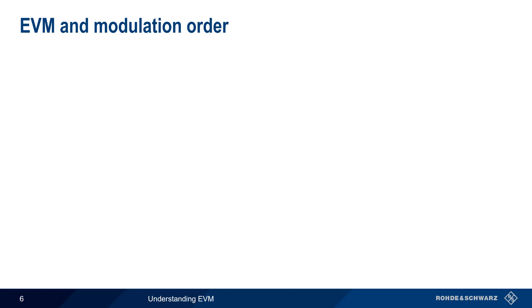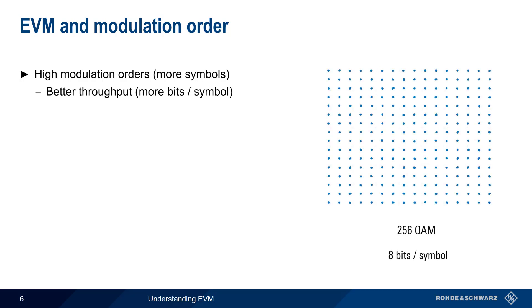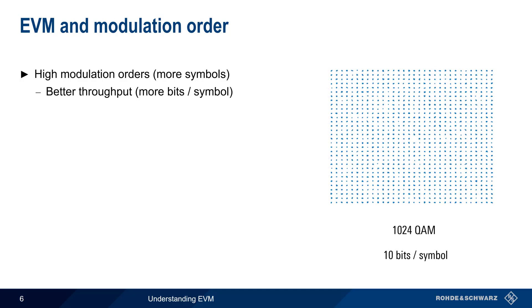Even relatively minor contributors to overall EVM become important as the modulation order increases. Higher-order modulation, that is, a greater number of symbols, means better throughput, since there are more bits per symbol. For example, 16 QAM is only 4 bits per symbol, 64 QAM is 6 bits per symbol, and higher modulation orders have even higher numbers of bits per symbol.